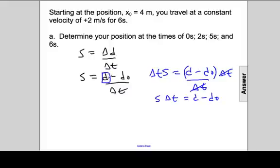And I'll rewrite speed times delta t is equal to d minus d-naught. Isolating d, so we have to add d-naught to both sides. So the distance traveled will now be speed times delta t plus d-naught, your starting location.